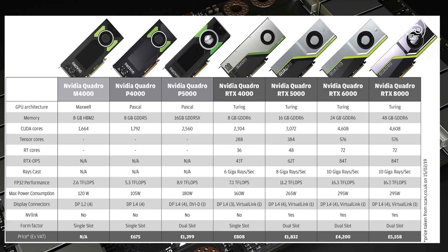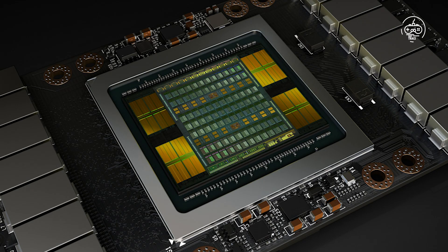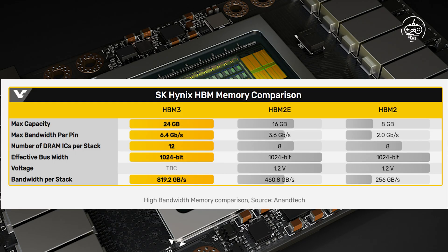There is no definitive answer to which option is better — HBM2 versus GDDR6 — because both have advantages and disadvantages. The selection depends on the individual's requirements and needs. Both memory standards deliver exceptional performance and are found in high-end graphics cards. When it comes to performance and power consumption, HBM2 should be the greatest memory choice. However, both memory standards are quite new with few commercial options, and both formats have trade-offs, so it comes down to consumers and their needs.